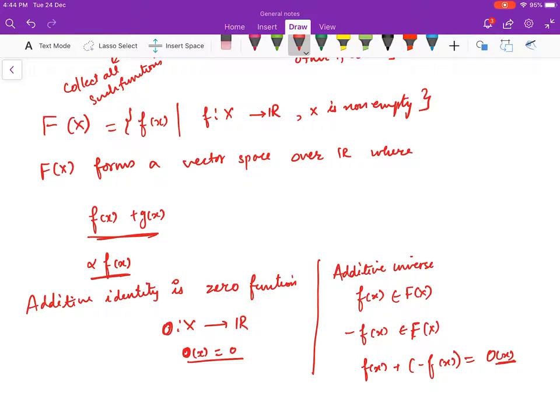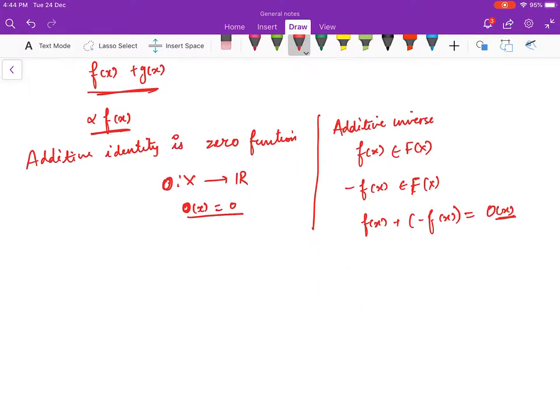All the properties hold true. These were the examples of vector spaces.